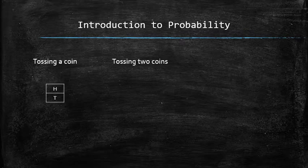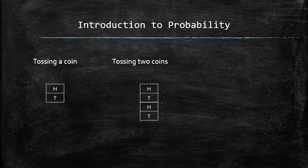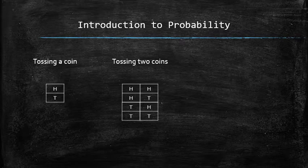When tossing two coins, we can get for the first toss either heads or tails. But now it can be combined with either heads or tails for the second toss. So this is the sample space for tossing two coins.